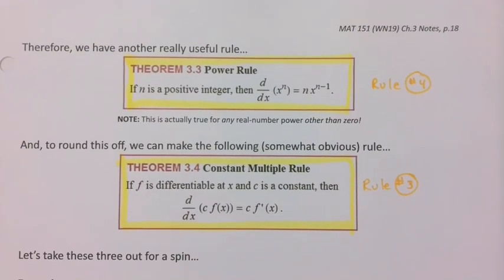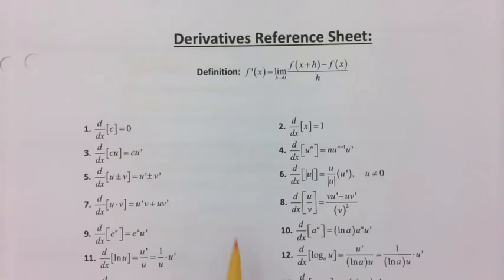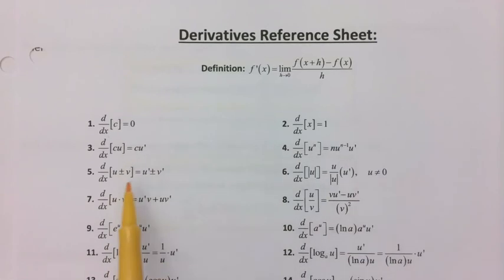And again, you can kind of ignore the u's for right now. For us, currently, our u will always be x. Therefore our u prime is always 1. But eventually, in section 3.7 and beyond, the u's will become very important to us, and the v's.